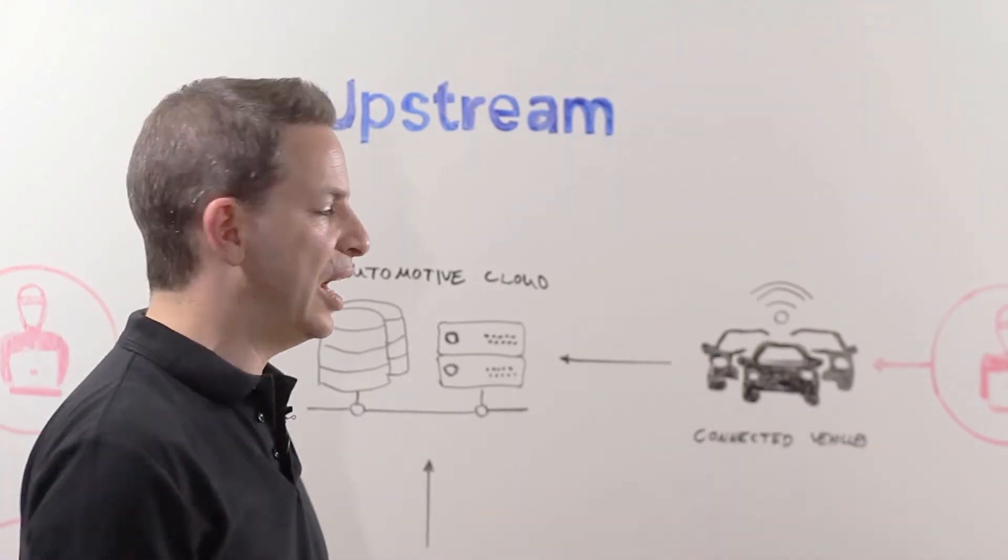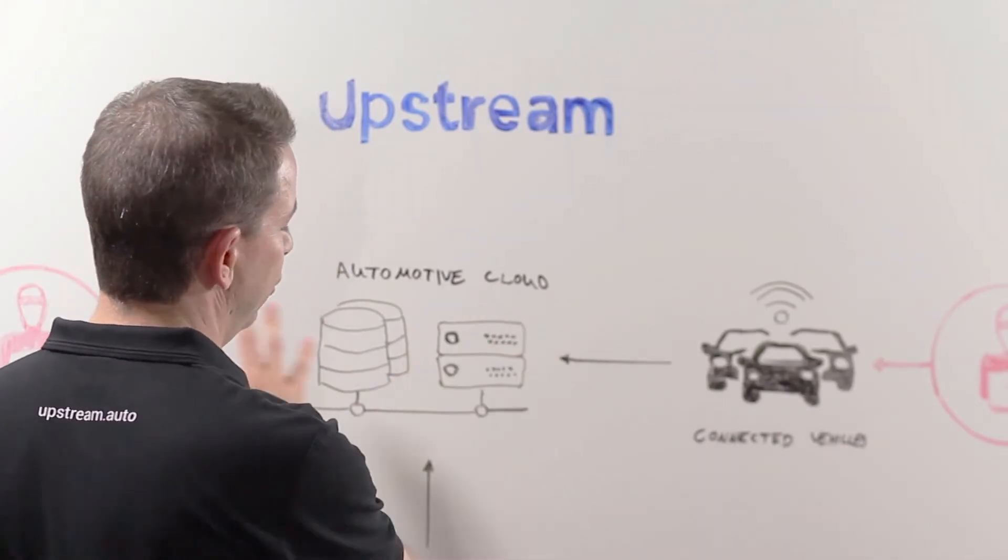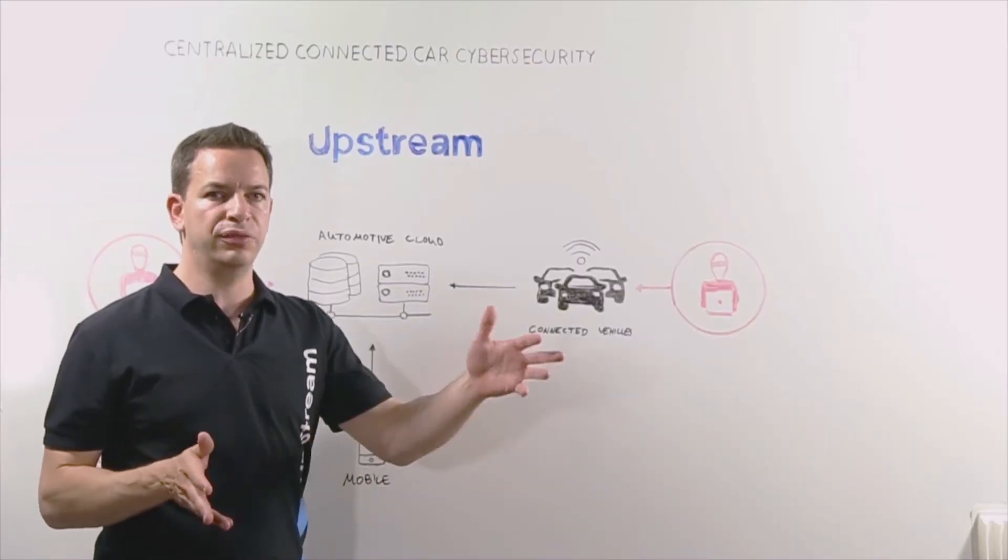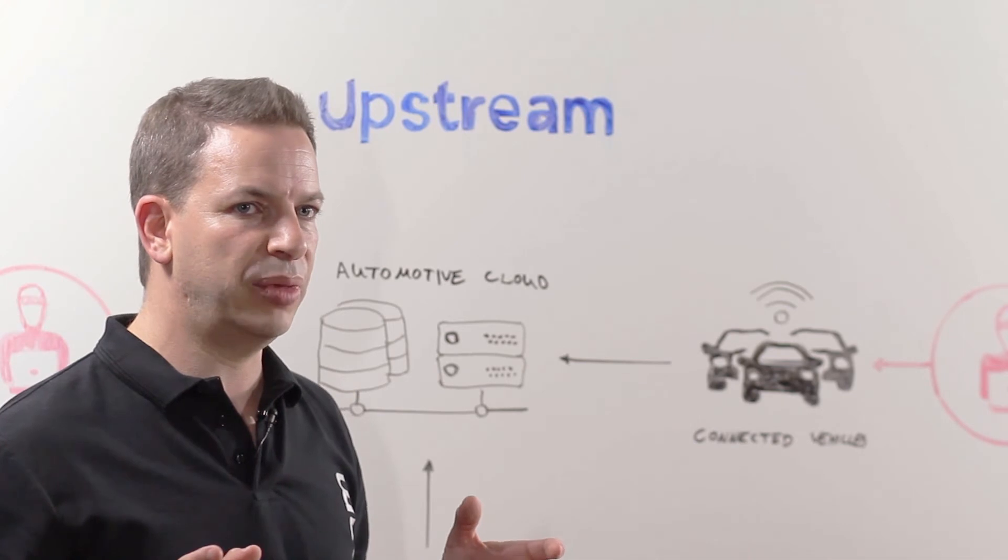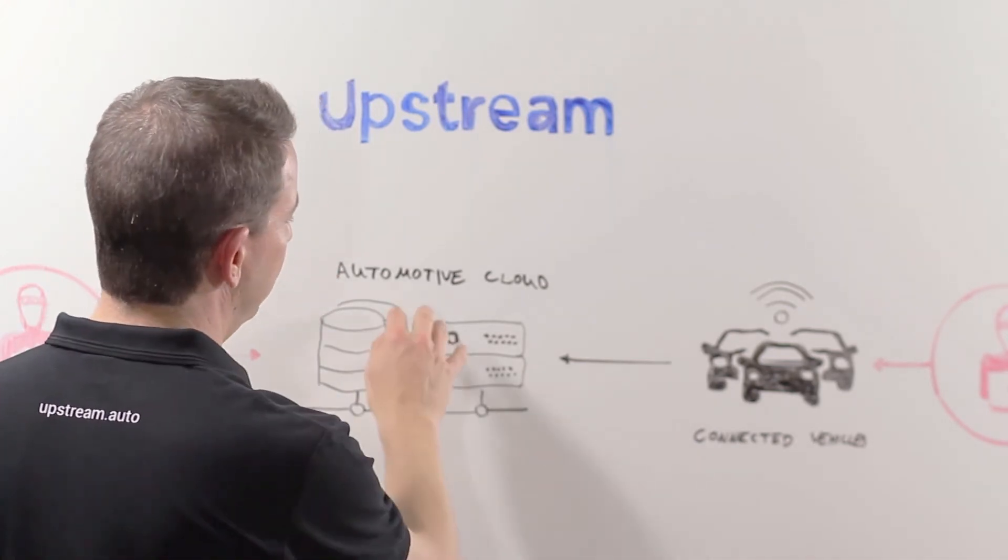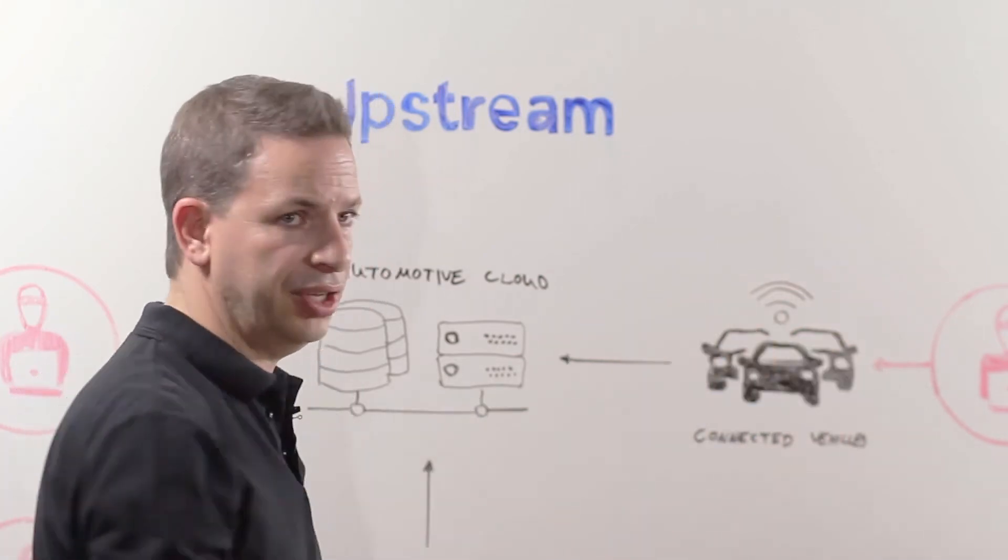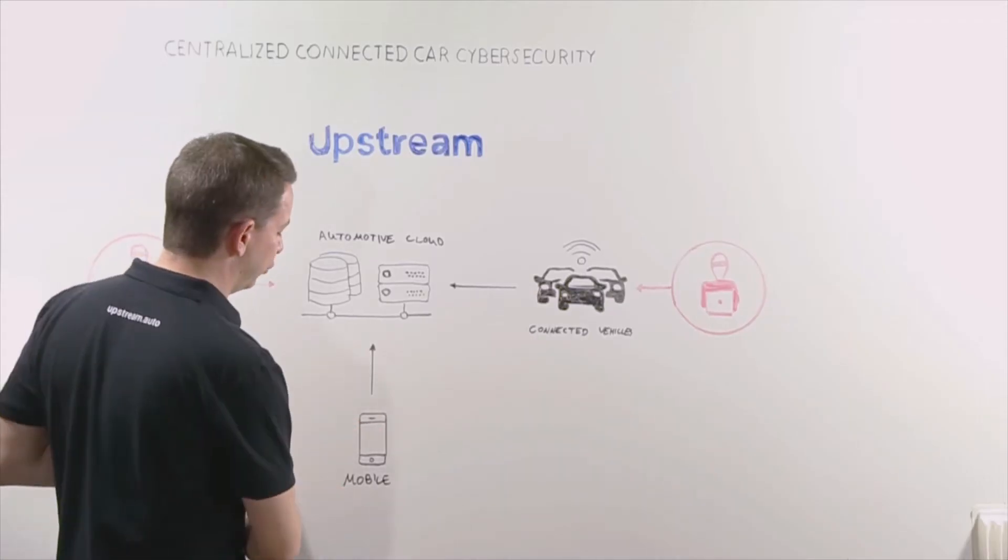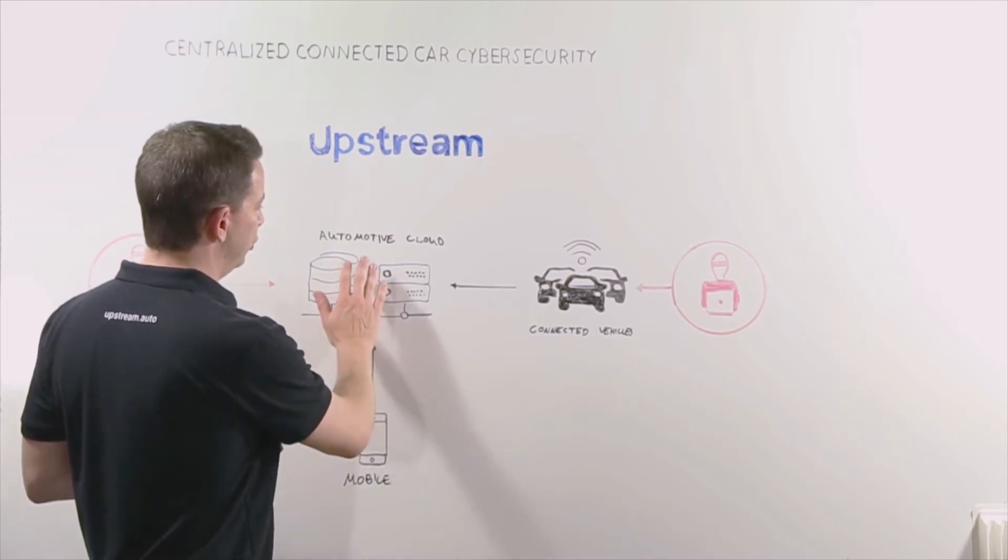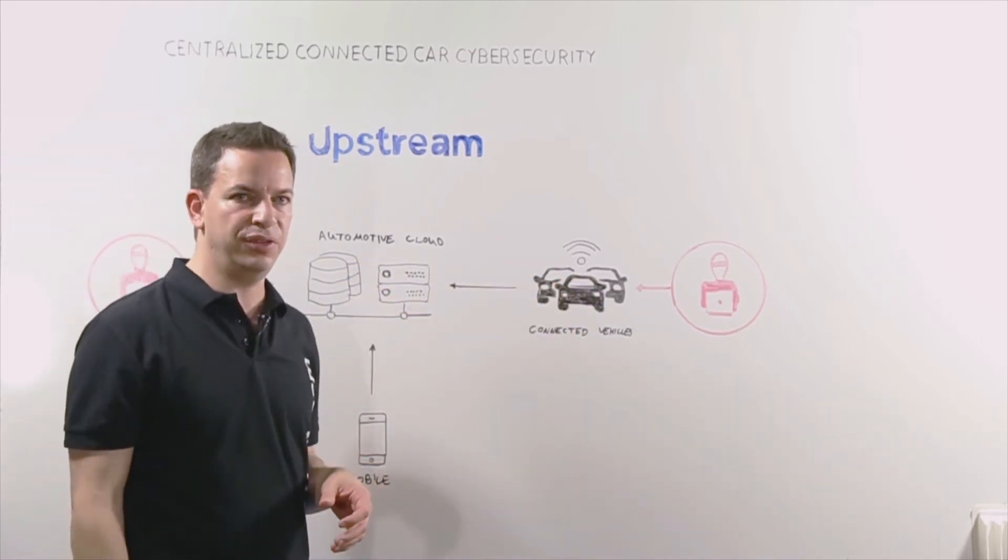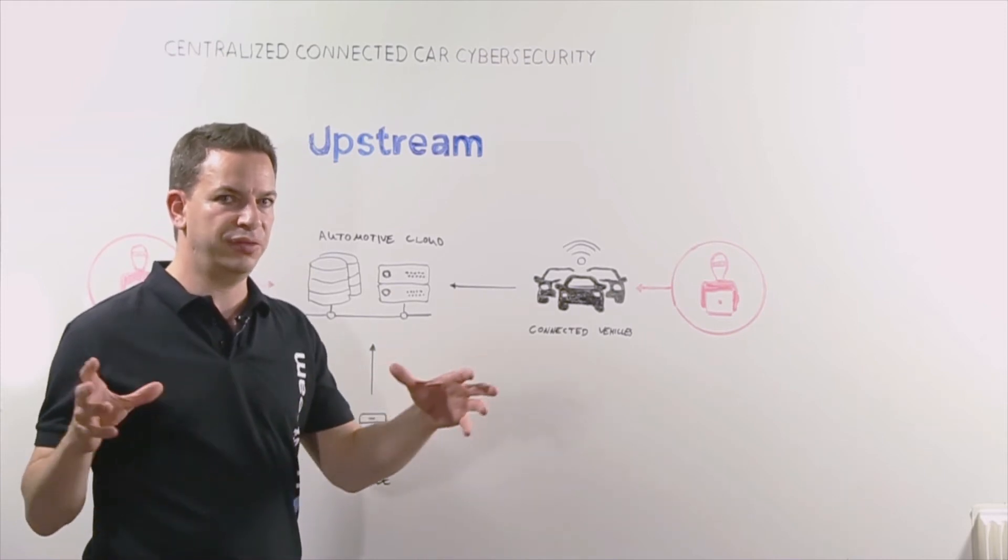The more serious attack vectors are what we call remote attacks that are generated from the public internet from locations nowhere close to the vehicle. Hackers can remotely compromise the service either by attacking the automotive cloud and through it attacking multiple connected vehicles. The third attack vector would be to go through the mobile app and use it to pivot into the automotive cloud and from there into connected vehicles, basically compromising the entire vehicle fleet.